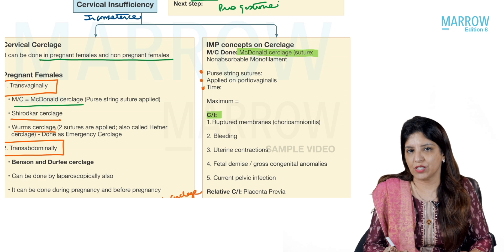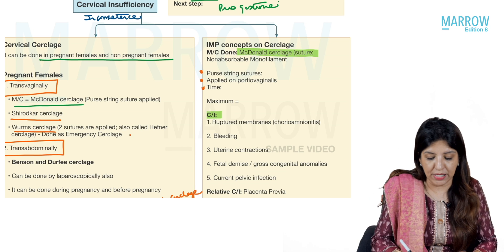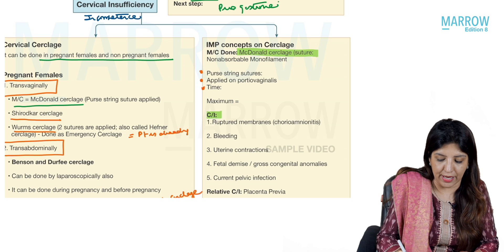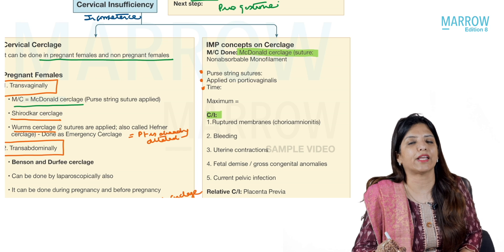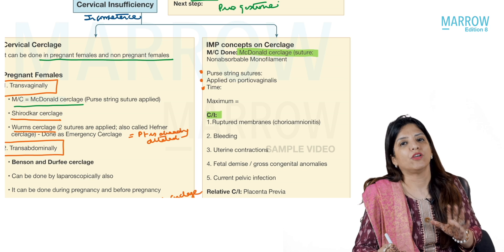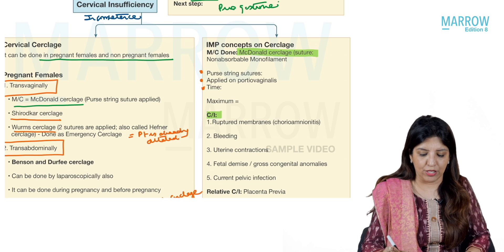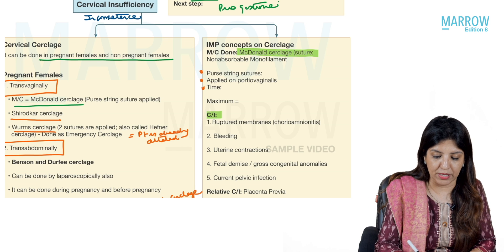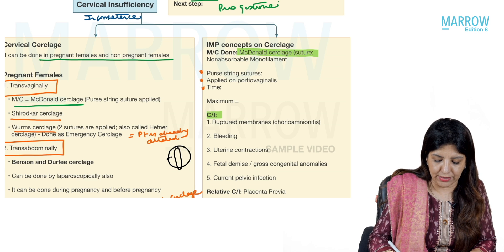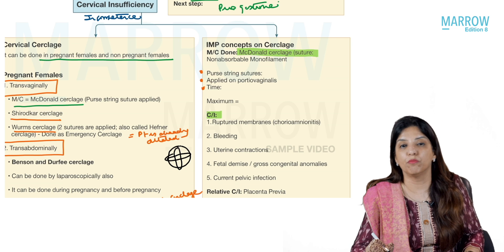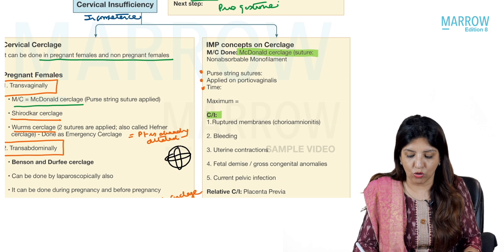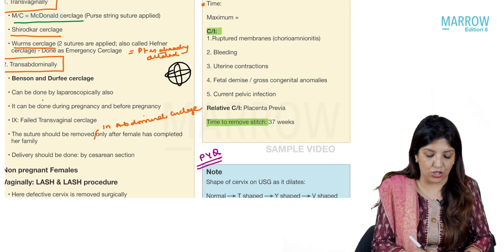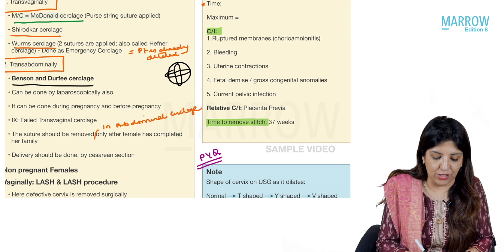Wurm's cerclage is used as an emergency cerclage when the patient is already dilated. In that case, you explain the poor prognosis and apply two stitches anteroposteriorly — that is Wurm's cerclage. Transabdominal cerclage is called Benson and Durfee cerclage; it can also be done laparoscopically, in both pregnant and non-pregnant females.